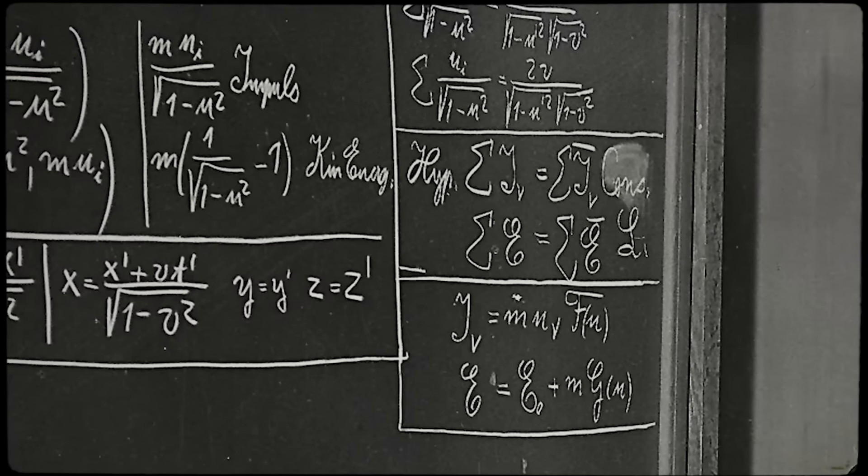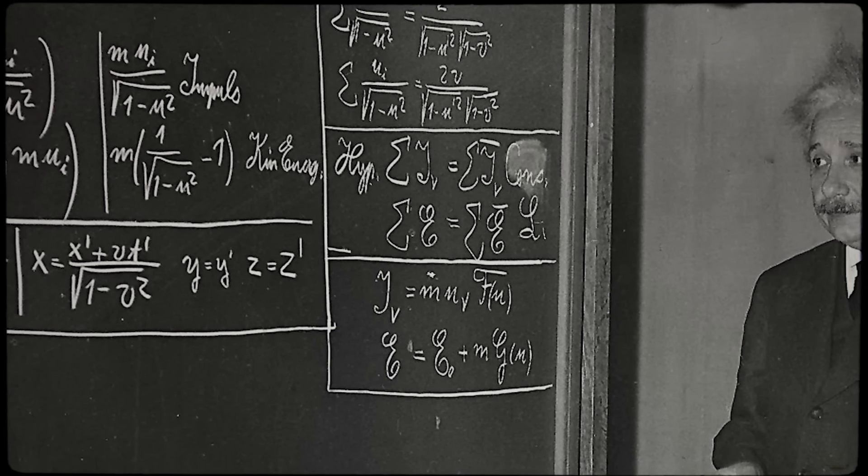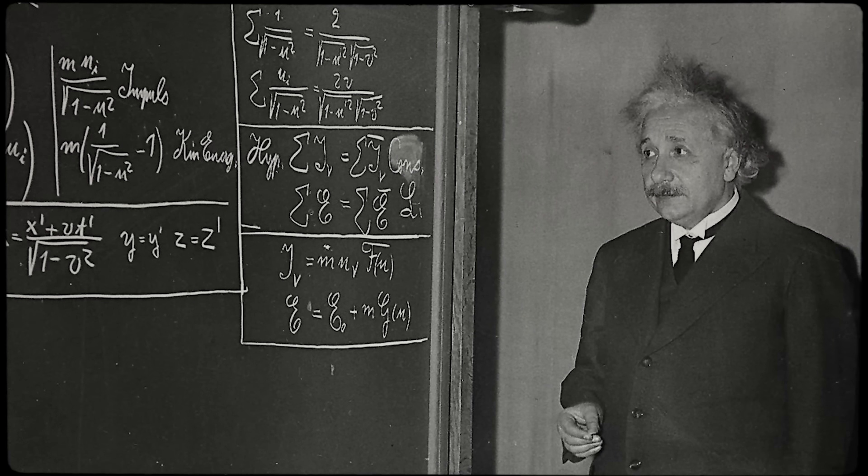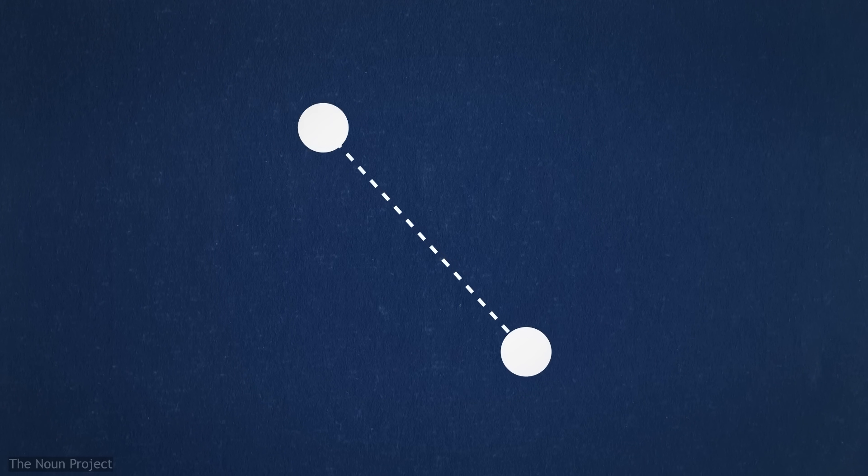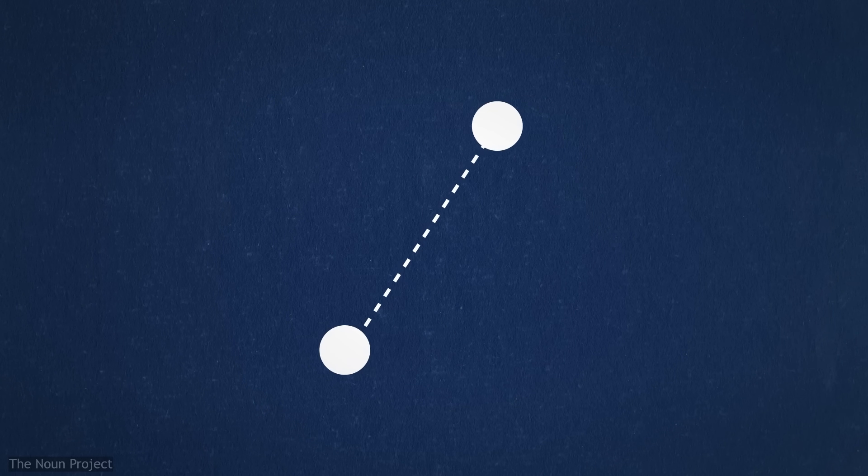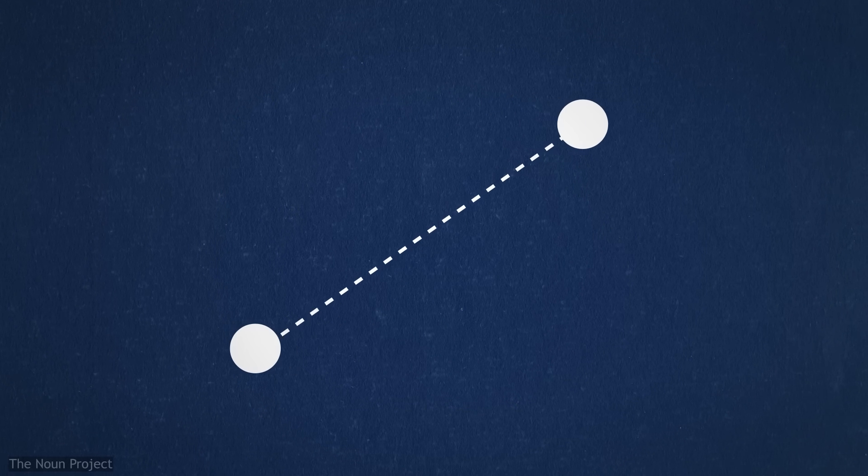In crafting relativity, Einstein rejected the concept of a fixed, universal ruler against which we could judge all motion. Instead, all inertial motion was relative. The only way to measure motion is in reference to something else. And from this fundamental idea, the rest of relativity blossoms.